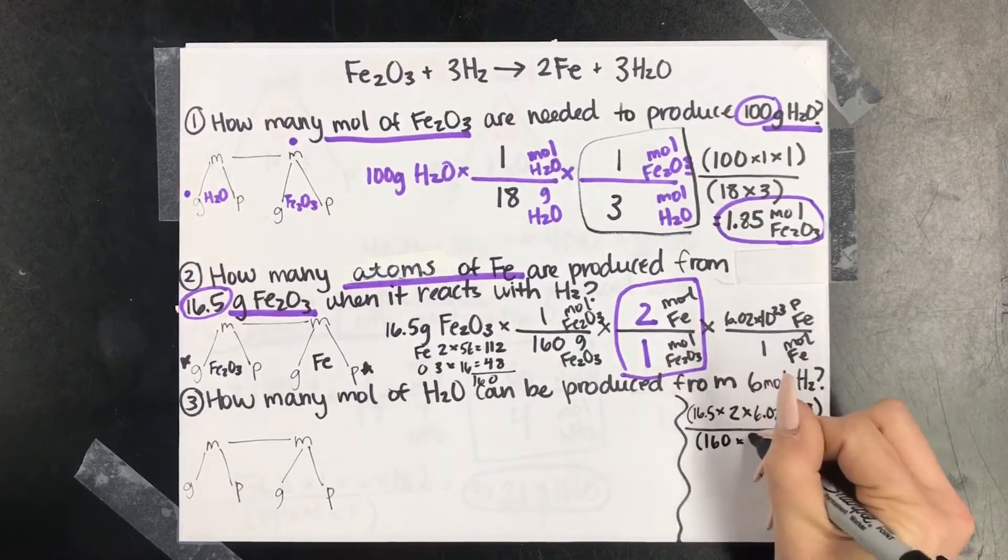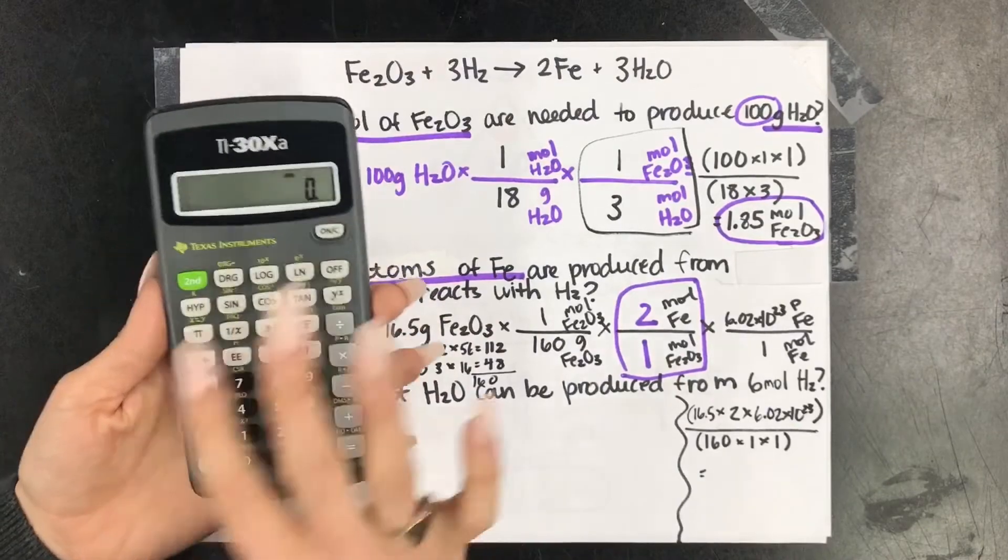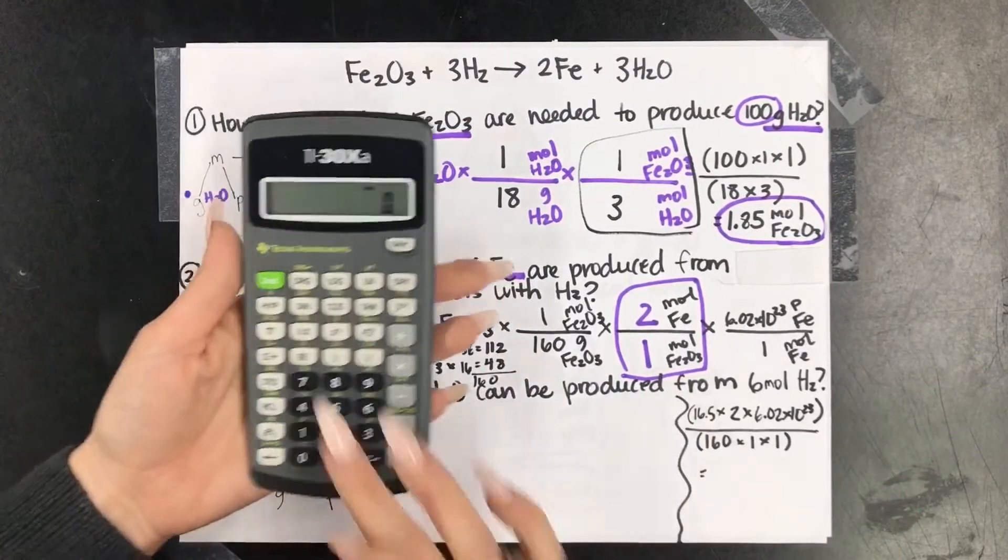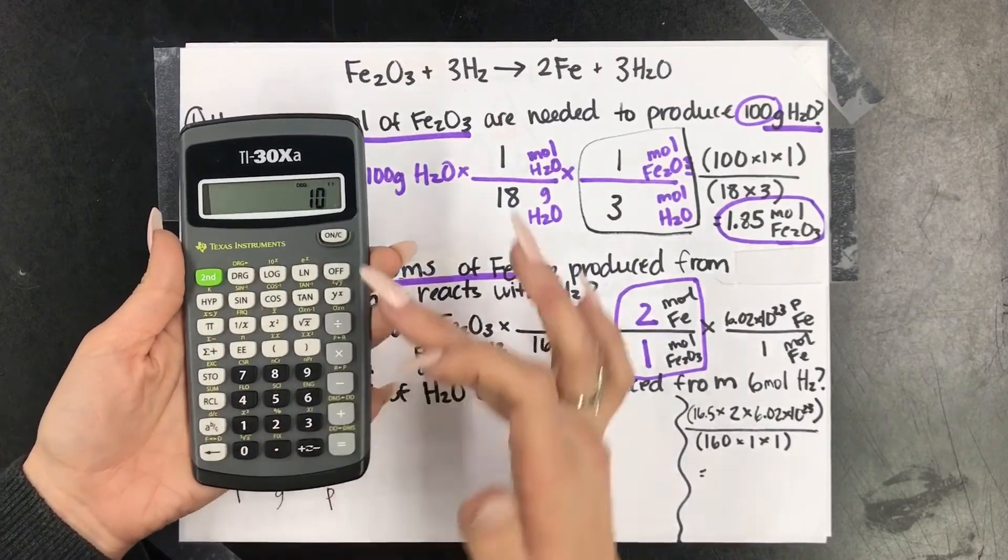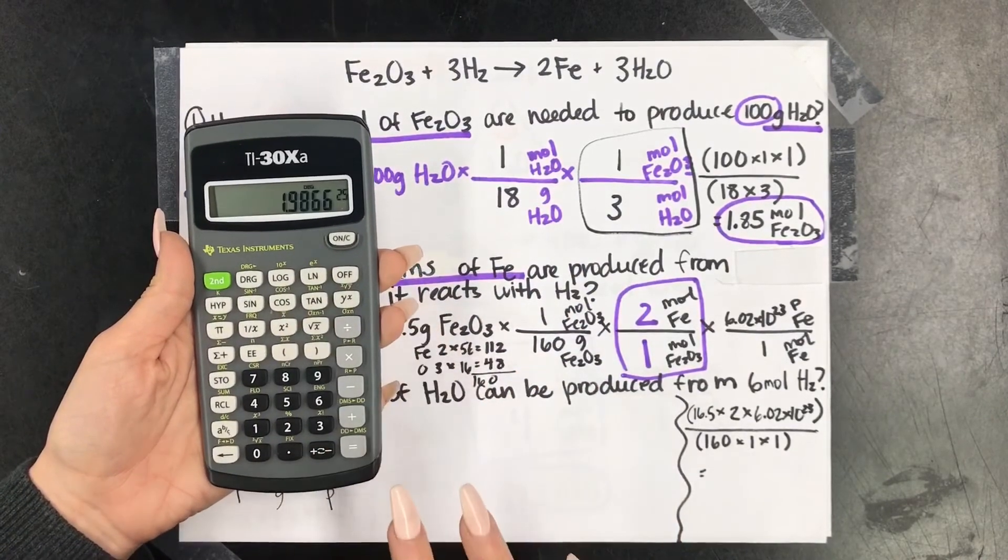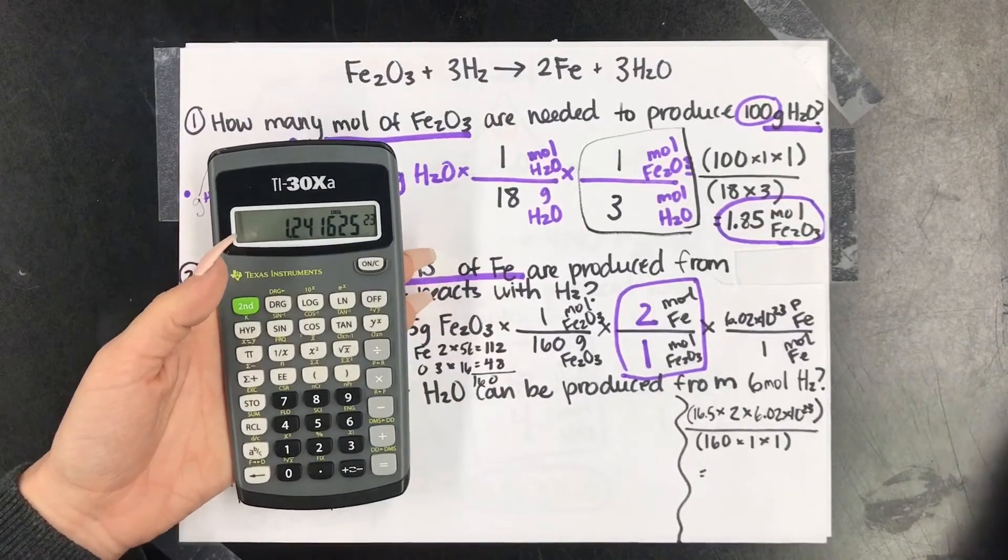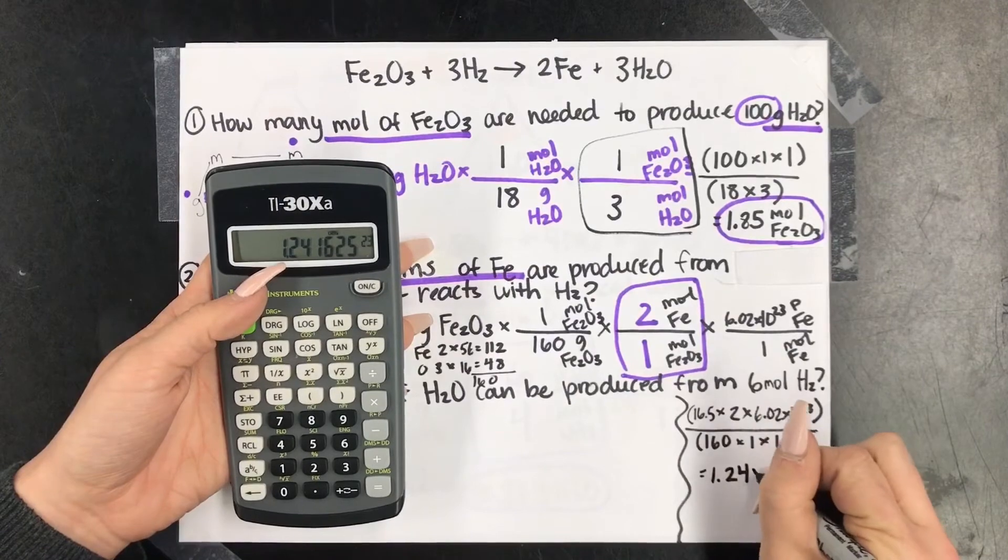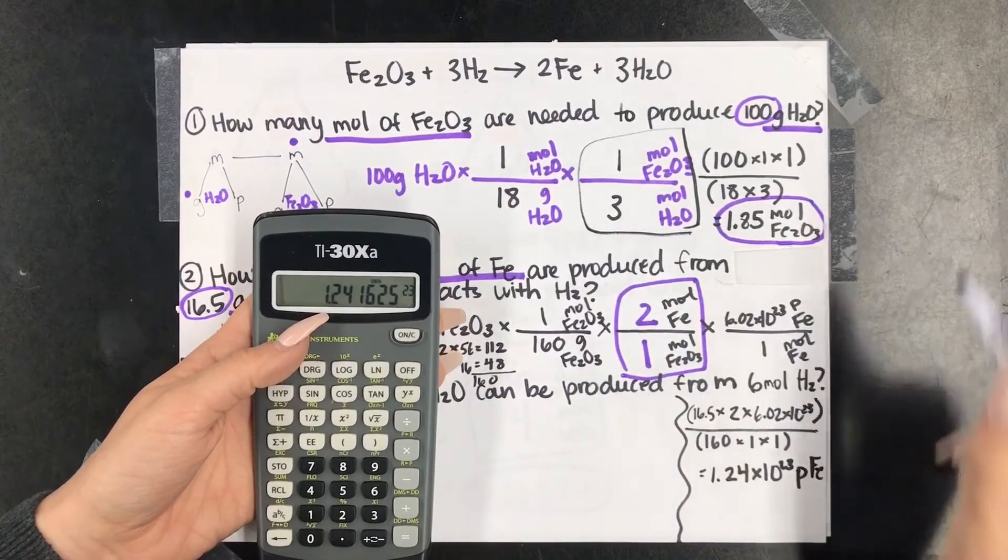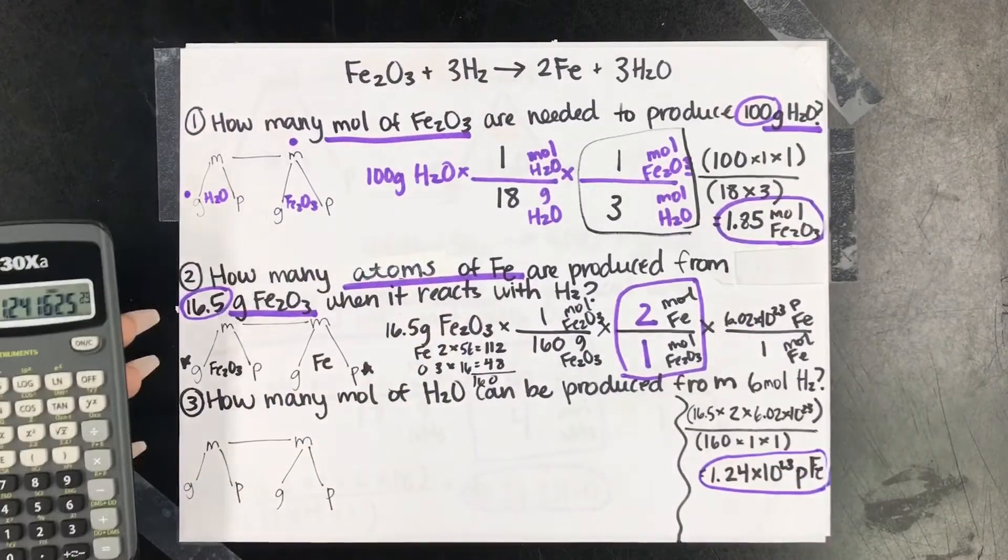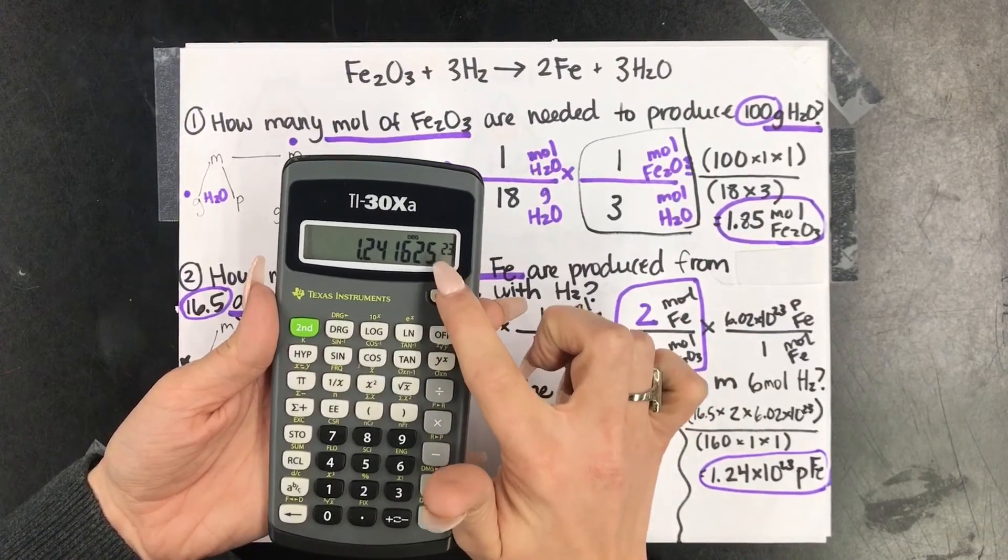So this one is a little bit trickier in the calculator if you're not comfortable with working with the exponents. But you're going to put it in exactly like that. So we're going to say parentheses 16.5 times 2 times 6.02 times 10, Y to the X, 23, close parentheses, divided by new set of parentheses, 160, close parentheses. And this would be our answer. So we have 1.24 times 10 to the 23. And then my answer would be particles or atoms of Fe. And again, that answer makes sense because it's asking me about atoms. So my answer should have an exponent. One thing I want to note right here. You don't see the times 10, but it is there. So make sure that you write it.